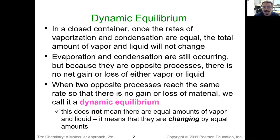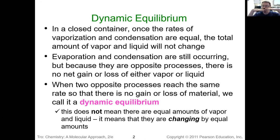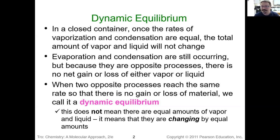Dynamic equilibrium — equilibrium is when two things are balanced. So if we have a teeter-totter, we have a kid on each side and they weigh the same and the teeter-totter is in equilibrium. That's a static equilibrium.